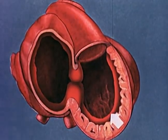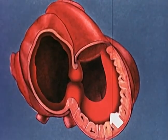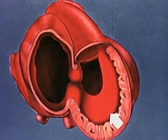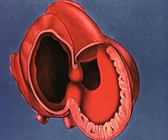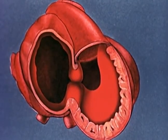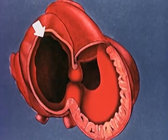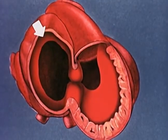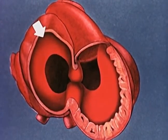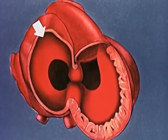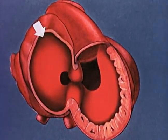From the interventricular ridge, a proliferating muscular septum advances across the common ventricle toward the base of the heart. Simultaneously, the interatrial septum rapidly grows toward the endocardial cushions, progressively constricting the foramen between the atrial chambers, the foramen primum.